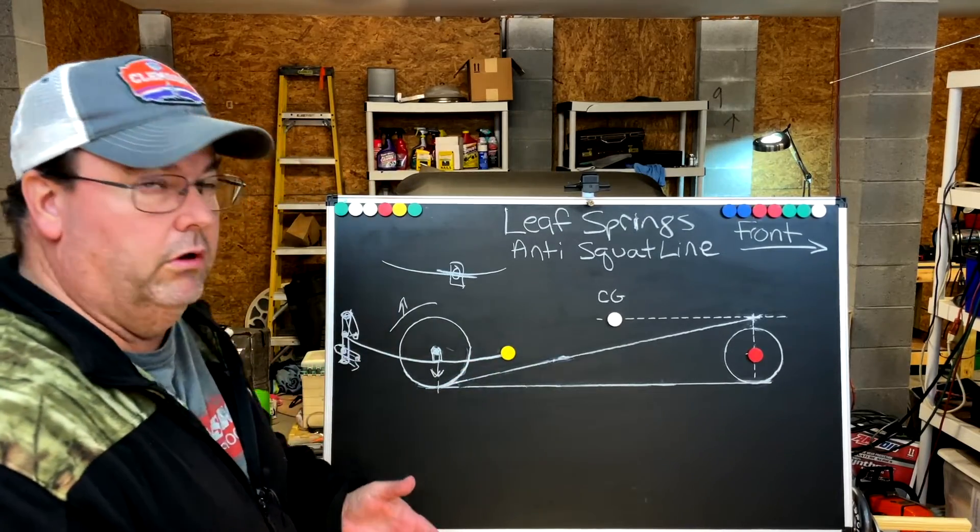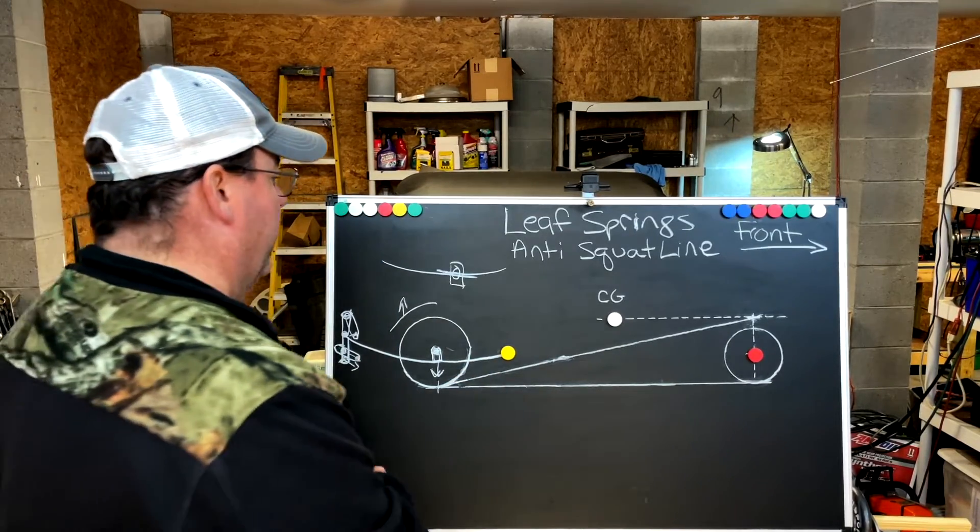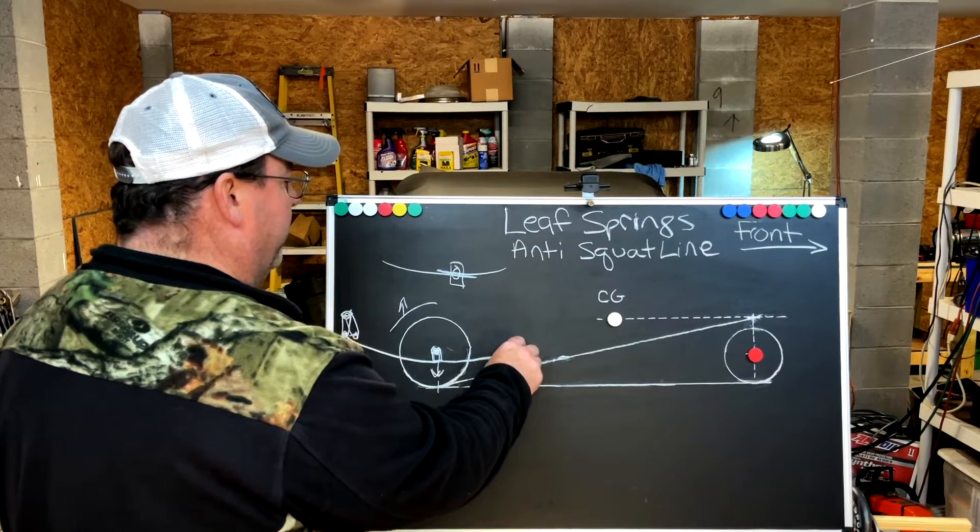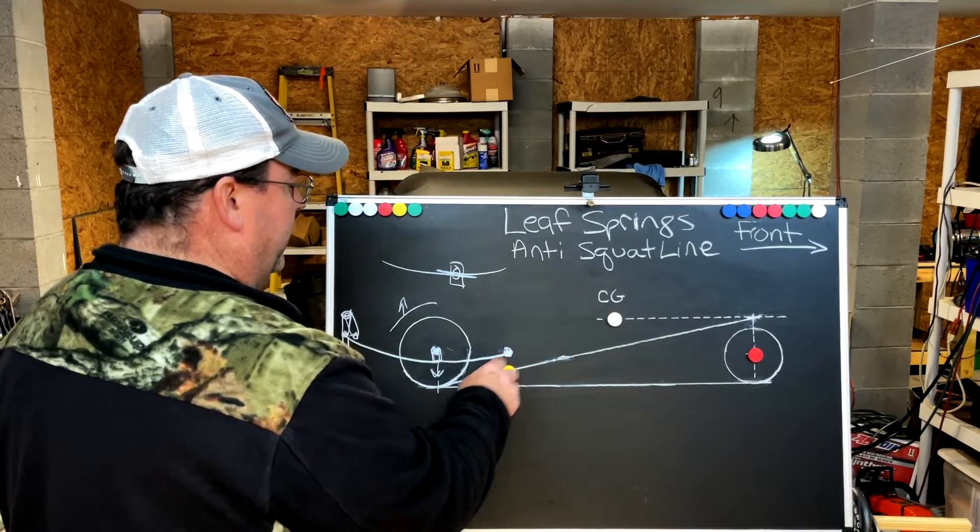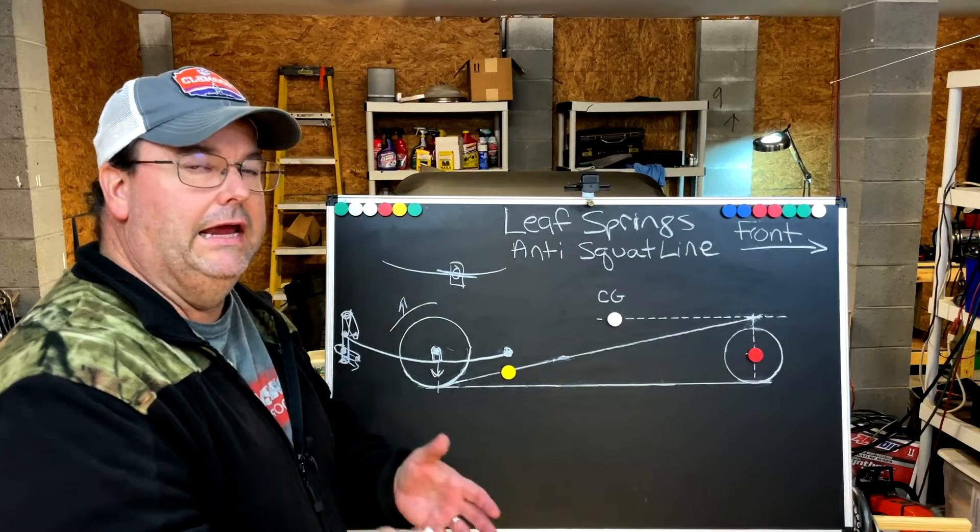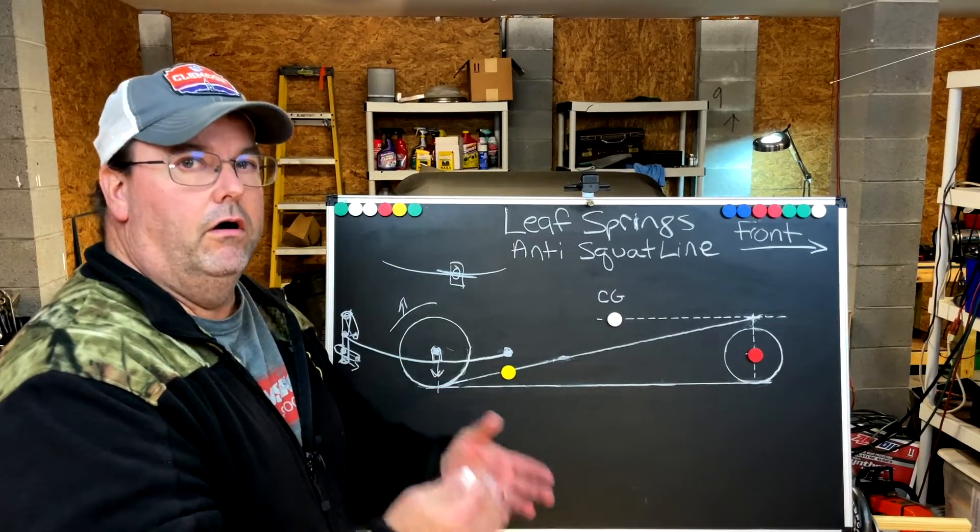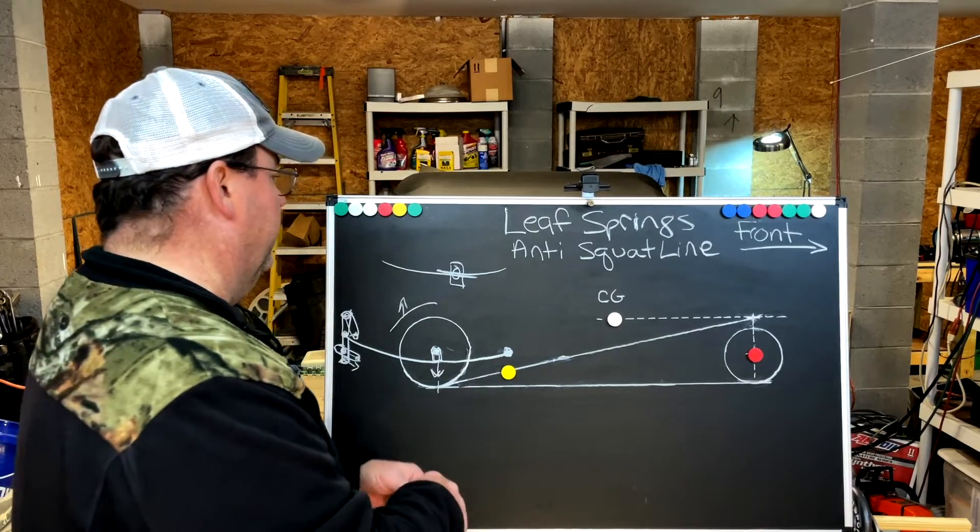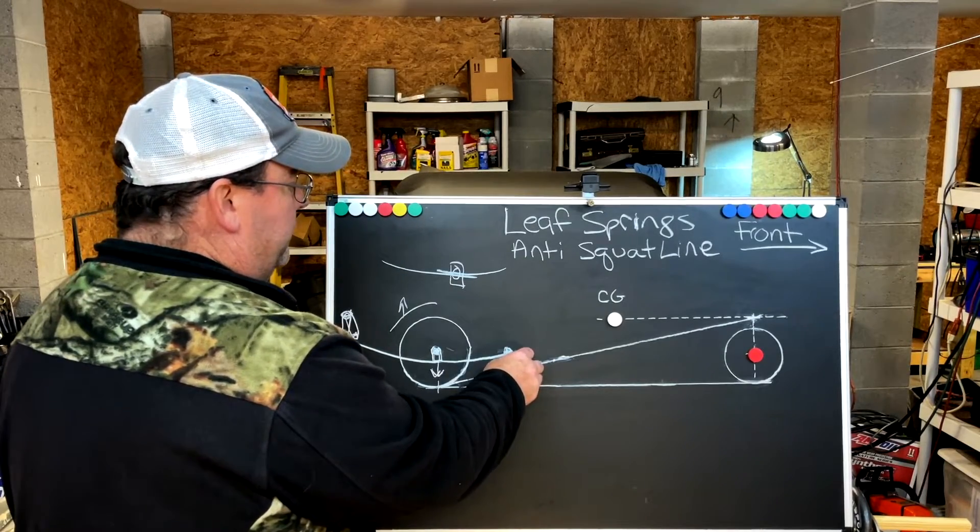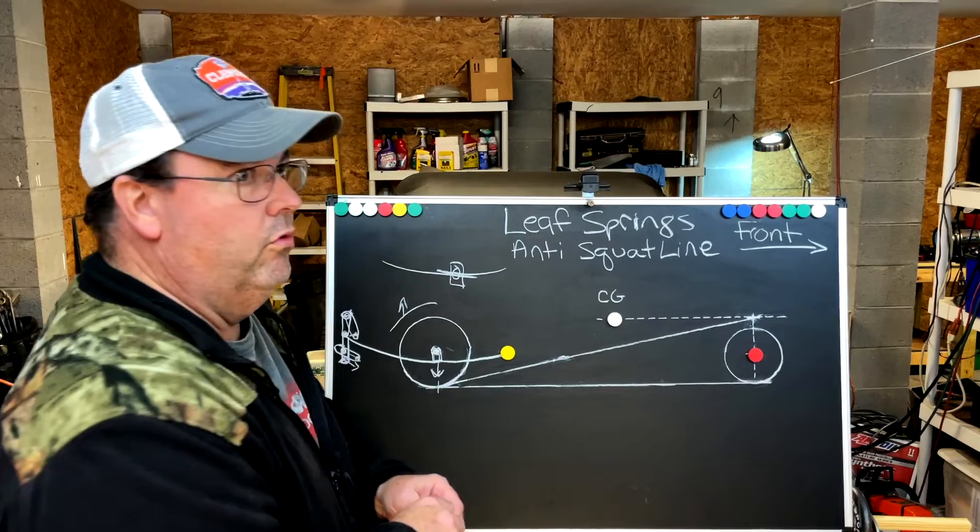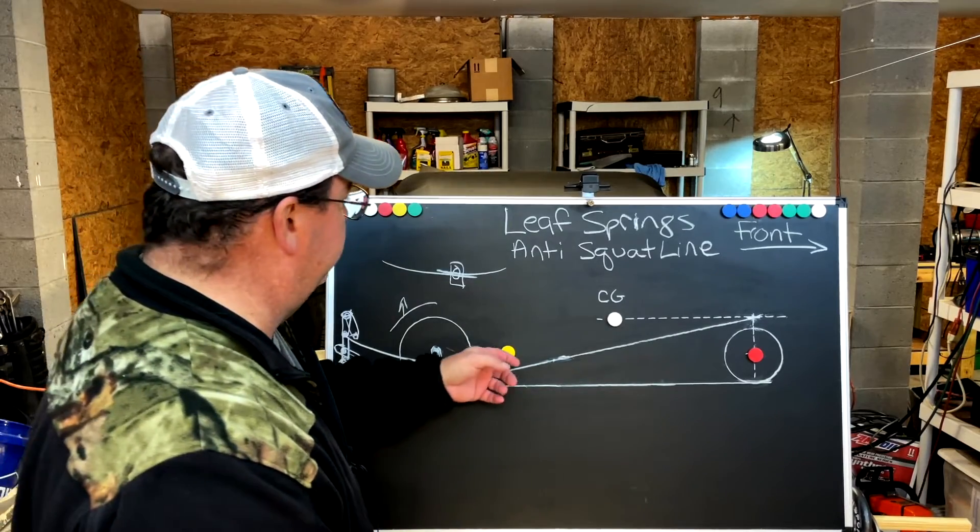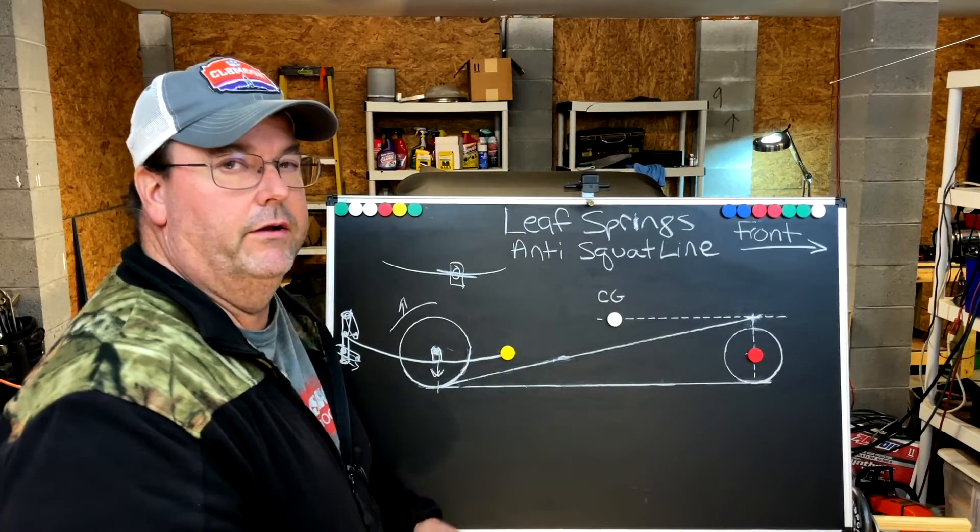Now we all lower our drag cars. And if you lower the front mount point down to the anti-squat line, you are taking away separation on your rear end. This is why it's so cool to understand the dynamics of this front mount point.